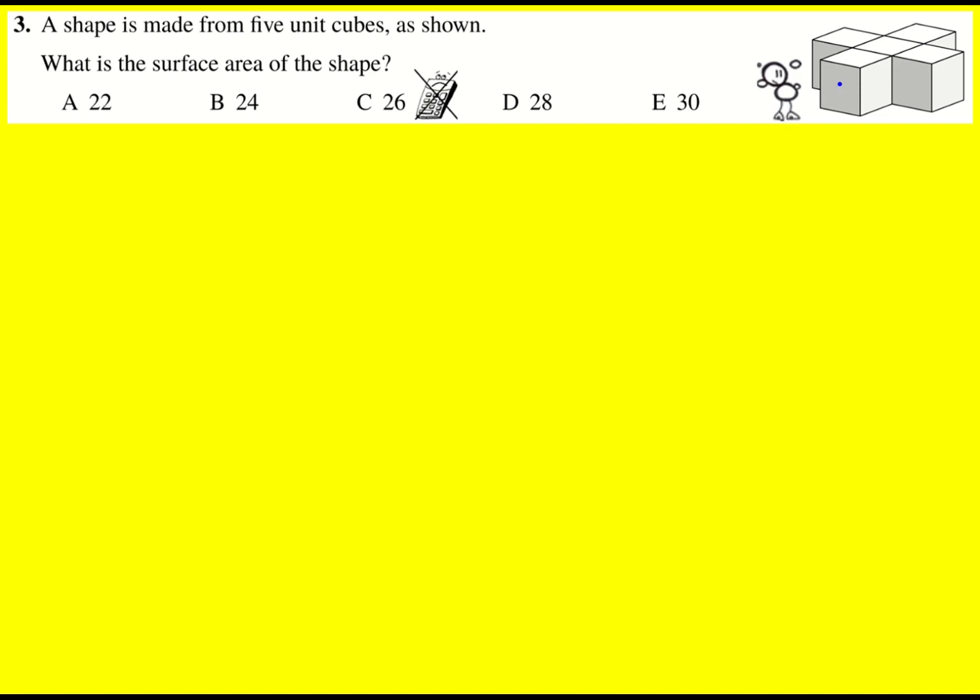The area of a single square in this question is going to be one. So essentially we're trying to add up all of the squares. And there's two ways we can do this.